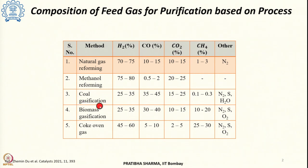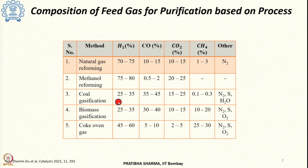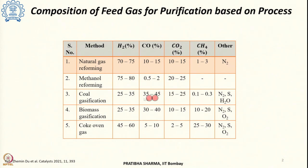When the syngas comes from coal gasification, the major content is carbon monoxide 35 to 45%, hydrogen is 25 to 35%, CO2 is 15 to 25%, and certain amounts of methane, nitrogen, sulphur-containing impurities and moisture.